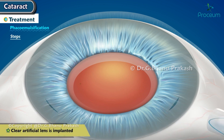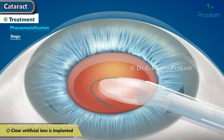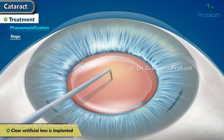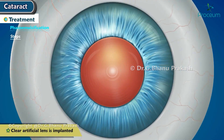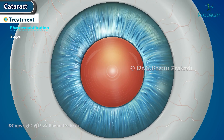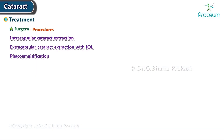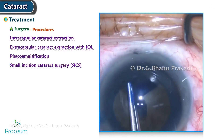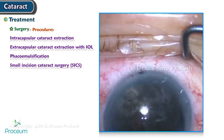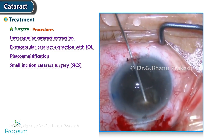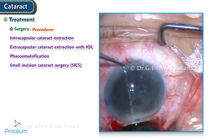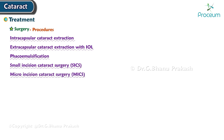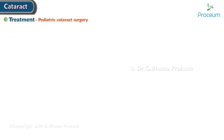Finally, a clear artificial lens is implanted using an injector. The intraocular lens unfolds gently into the capsular bag, replacing the removed natural lens. Other surgical procedures include small incision cataract surgery (SICS), microincision cataract surgery, femtosecond laser-assisted cataract surgery, and pediatric cataract surgery.